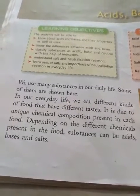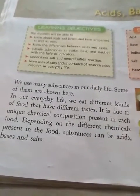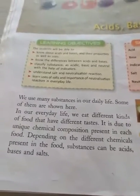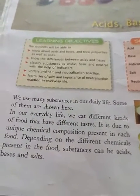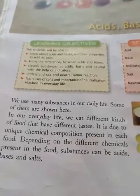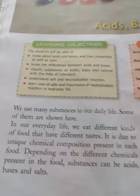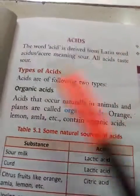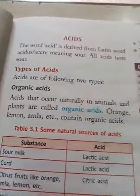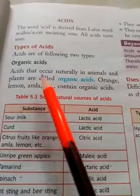Depending on the different chemicals present in the food, substances can be acids, bases, and salts. These substances have different tastes. Acids are of two types: organic acids and mineral acids. Organic acids are acids that occur naturally in animals and plants.